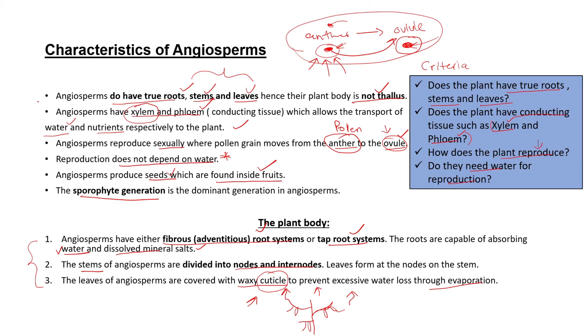So that is the plant body of angiosperms. Remember to always know these points — they can be worth six marks just for describing them. These characteristics are very important. Please subscribe to this channel and recommend it to your friends. Thank you for watching.